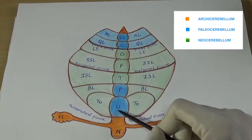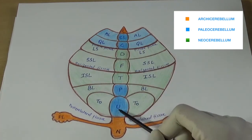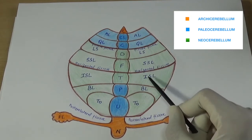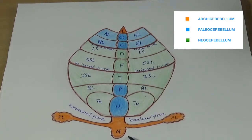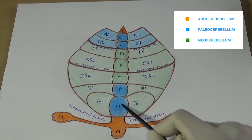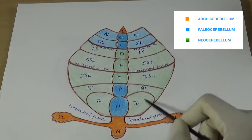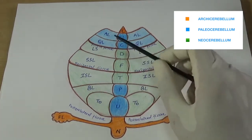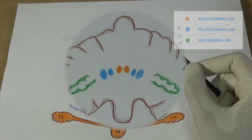The flocculonodular lobe plus the lingula form the archicerebellum. The anatomical anterior lobe plus pyramid and uvula form the paleocerebellum or spinocerebellum. The rest of the posterior lobe (minus pyramid and uvula) is the neocerebellum or cerebrocerebellum. The archicerebellum is also termed the vestibular cerebellum, related to tone, posture, and equilibrium of trunk muscles; the paleocerebellum maintains tone, posture, and equilibrium of proximal limbs; and the neocerebellum governs skillful voluntary activities and fine movements of small joints.